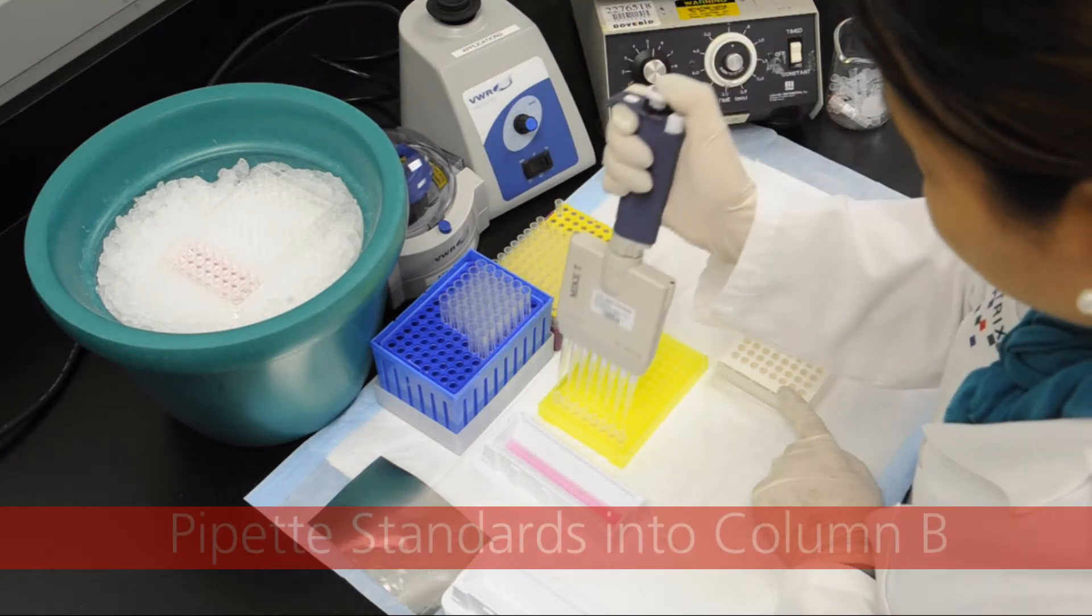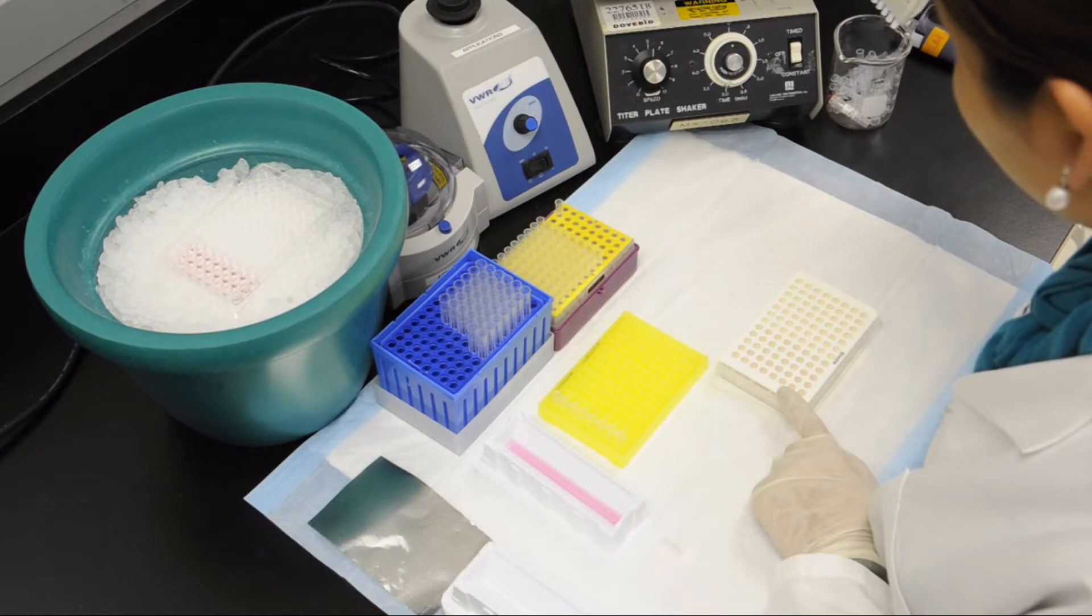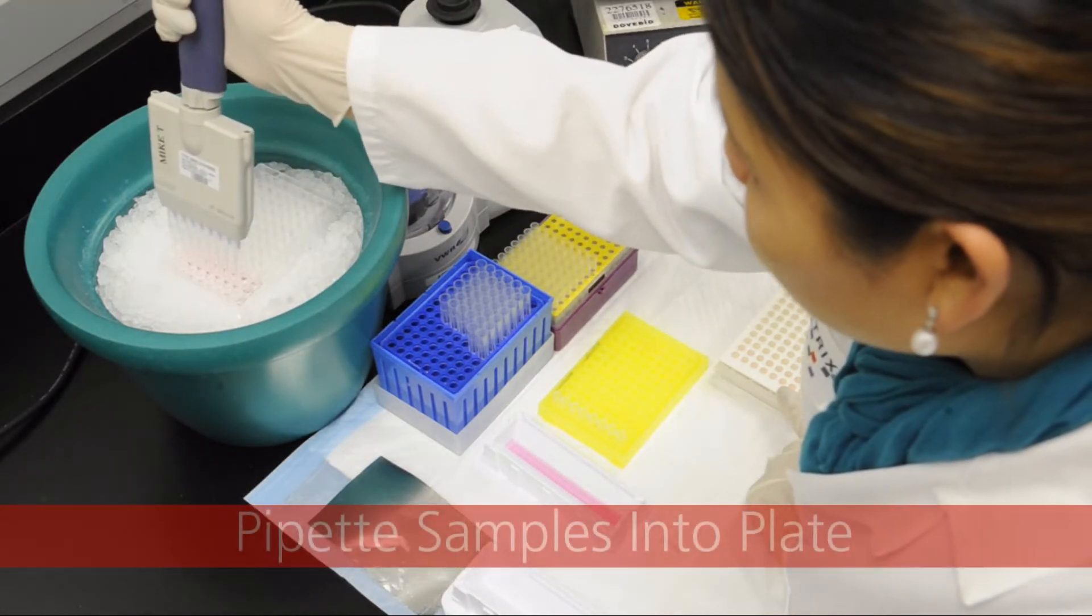Using new tips, transfer 50 microliters of the standards into column B of the microtiter plate. Using new tips, pipet the samples into the plate.